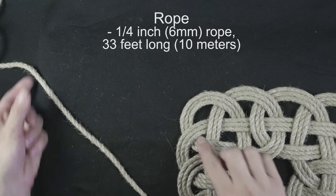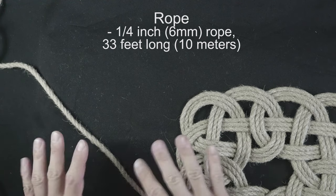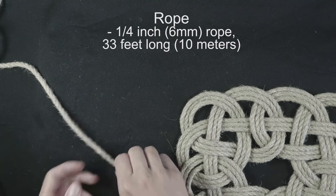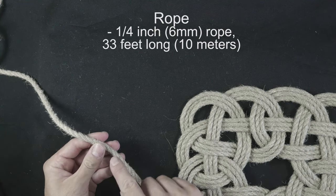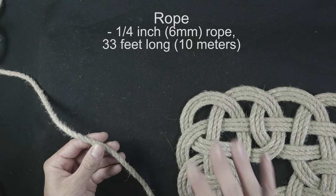This is enough for a 3 pass version of the mat. You can use any type of cordage that you would like. In my case I'm using hemp. Manila, sisal, other natural cordages work well.